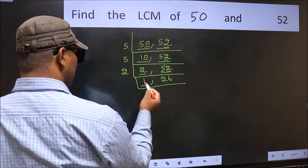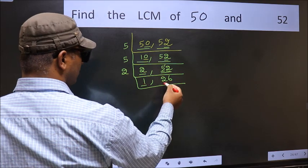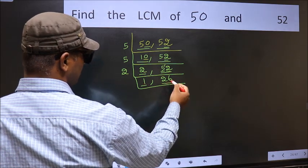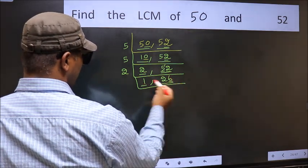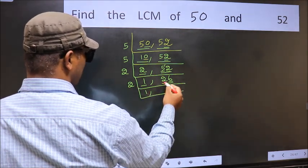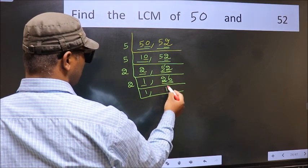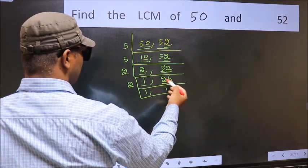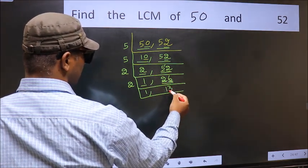Now we got 1 here, so focus on the other number, 26. Last digit 6, even, so take 2. First number, 2. When do we get 2 in the 2 table? 2 times 1 is 2. The other number, 6. When do we get 6 in the 2 table? 2 times 3 is 6.